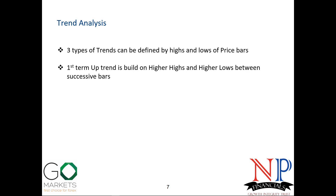The first term or short term uptrend is built on higher highs and higher lows between successive bars. If you take two bars and the second bar's high is higher than the first and the second bar's low is higher than the first bar, that is a first term uptrend. If it is a weekly or daily chart, the two bars on the right-hand side are telling you the first term or short term trend.